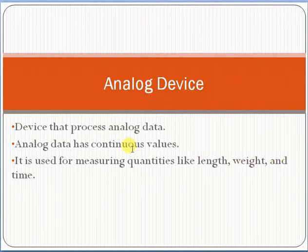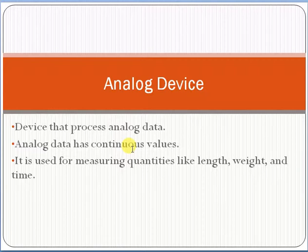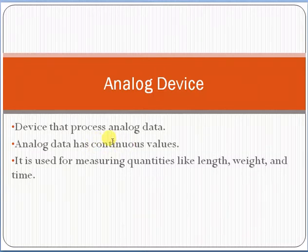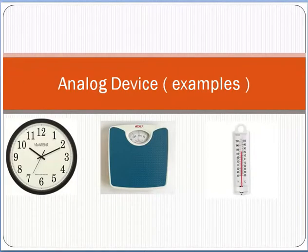So an analog device is a device used to process analog data. Analog data has continuous values — continuous means continuously increasing or decreasing. Let me give you some examples of analog devices.